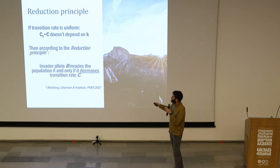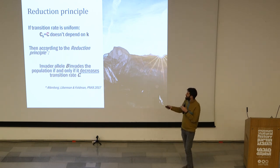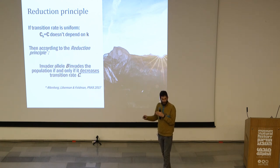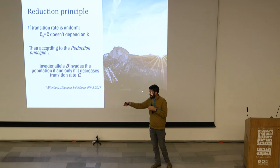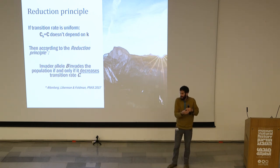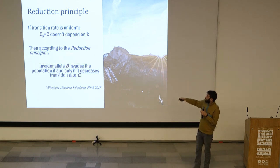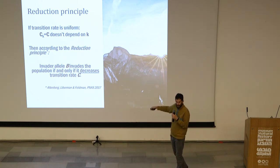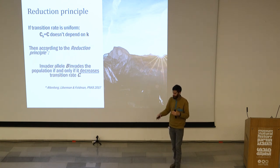This kind of analysis has been done before — by me, Uri Lieberman, and Mark Feldman — for a specific case in which the transition rate doesn't depend on the type. So the rate of transitioning is the same for all types; you can't have only below-average individuals transition with high probability while the rest stay the same. If that's the case, then according to the reduction principle, an invader allele big-B can invade the population only if it decreases the transition rate. A mutator allele can fix only if it reduces the mutation rate; a migration modifier can invade only if it reduces the migration rate.